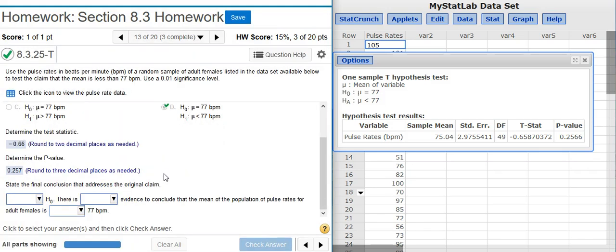And now, the last part of the problem asks me to state the final conclusion that addresses the original claim. To do this, I'm going to compare the p-value with the significance level. Here in the problem statement, we have a 1% significance level, but our p-value is almost 26%. That's definitely above 1%. Therefore,